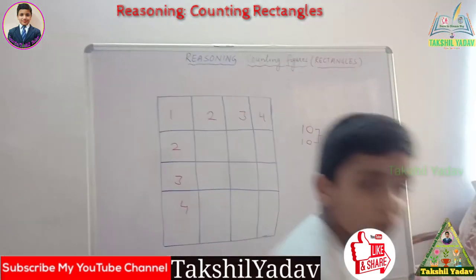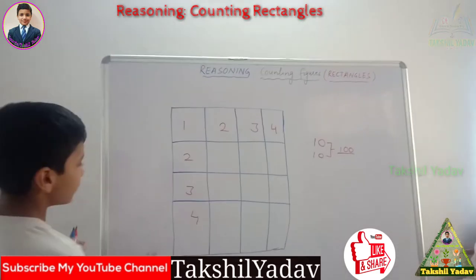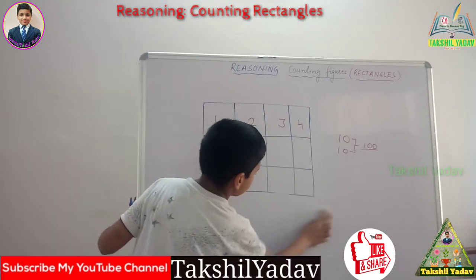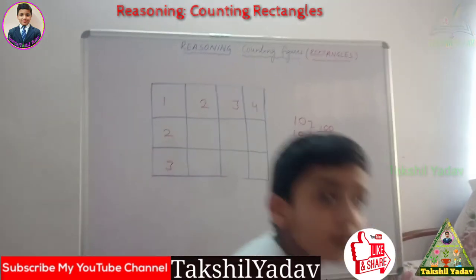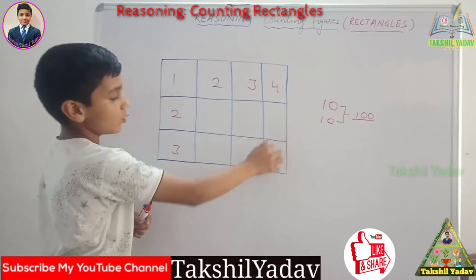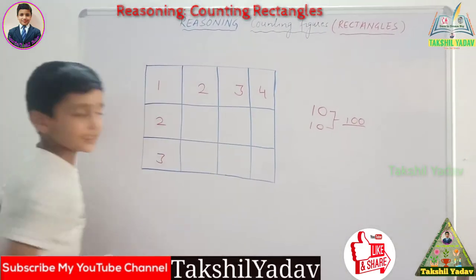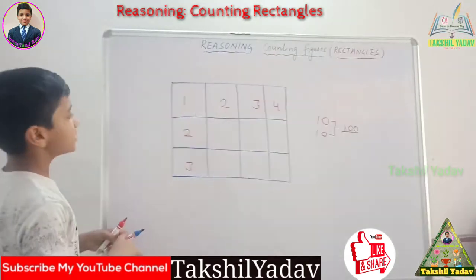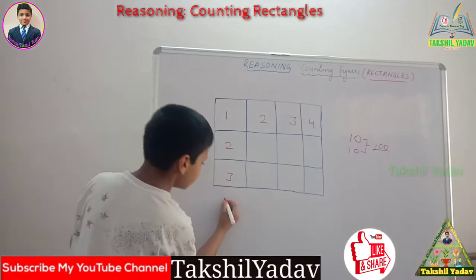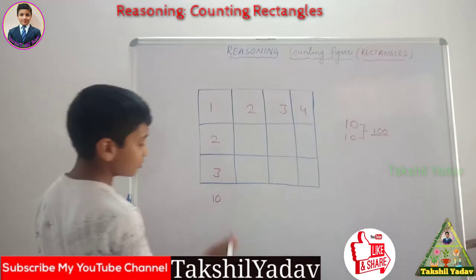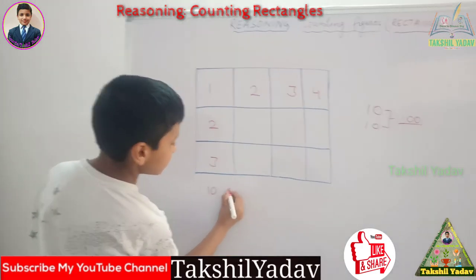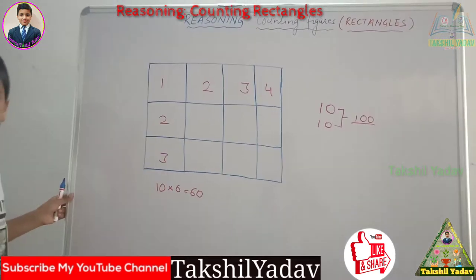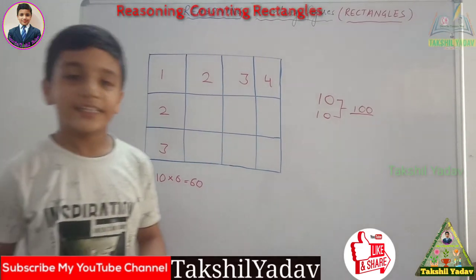Now comes the second type, where the columns and rows are not equal. We still have 4 columns — 1, 2, 3, and 4 — but the number of rows has decreased by 1. We have 3 rows. The process is the same: 1 plus 2 plus 3 plus 4 gives us 10, and 1 plus 2 plus 3 gives us 6. So 10 multiplied by 6 gives us 60. Thus there are 60 rectangles in this figure.